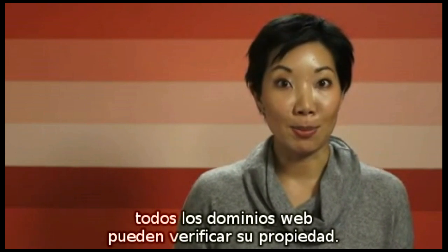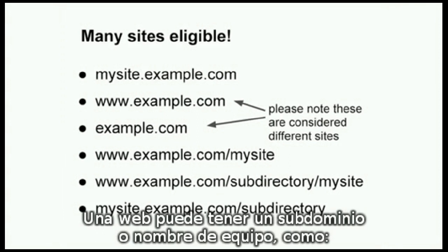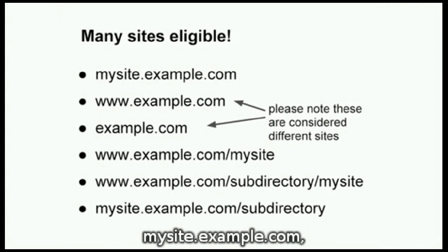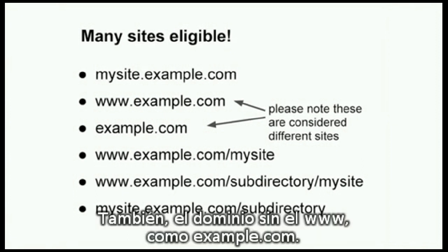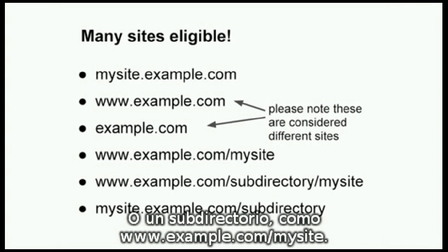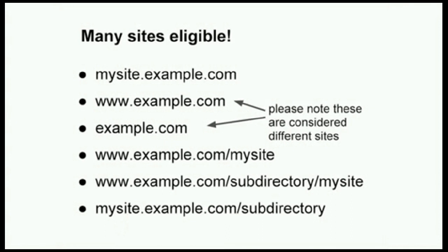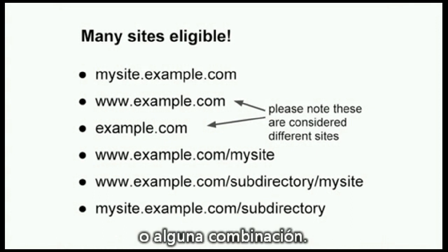All types of sites are eligible for verifying ownership with Google Webmaster Tools. A site can include a sub-domain or hostname, like mysite.example.com, or it can be the domain with a www, like www.example.com, or the domain without the www, like example.com, or a subdirectory like www.example.com/subdirectory, or some combination.